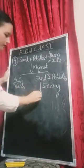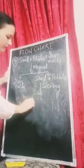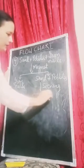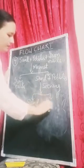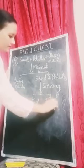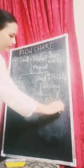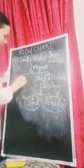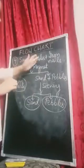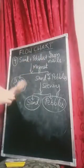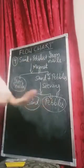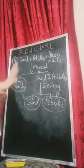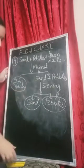After doing sieving, you will have sand and pebbles — now all are separated. Three things were there and all three are now separated. Four methods are done.